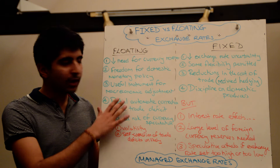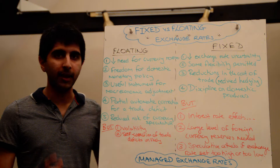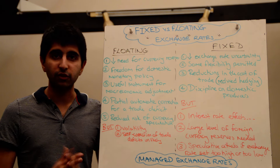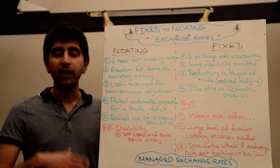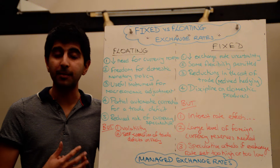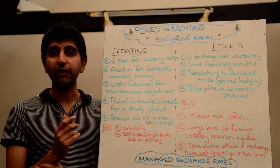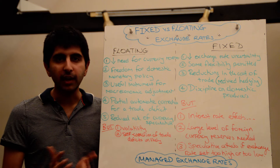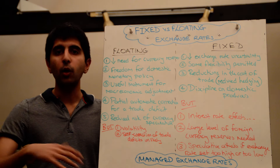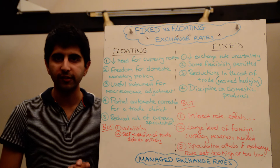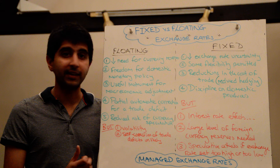Number three is quite an interesting point — I've made a separate video on how a floating exchange rate can naturally help partially correct a current account deficit automatically. Take a country with a large current account deficit: net exports are negative, there is more supply of the currency from buying imports than demand for it, so supply shifts right, lowering the exchange rate. That lower exchange rate makes imports more expensive and exports cheaper, which in theory can help partially correct a trade deficit. It's automatic correction — watch my video on that for more detail.